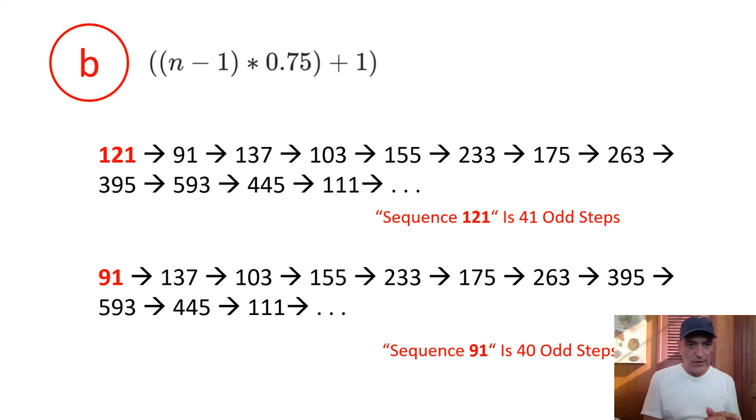Here's operation B and we know that this reduces numbers. For sequence 121, the next step is 91, then it goes up again. That looks like obviously an operation A. Then the next one is an operation B. This sequence has 41 steps. Now I wonder how many steps 91 has. Sequence 91 - surprise, it only has 40 steps, one fewer. To treat these as two separate sequences is quite absurd.